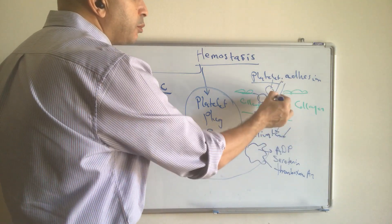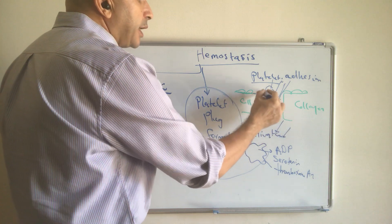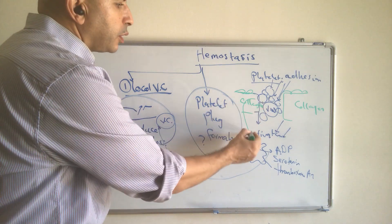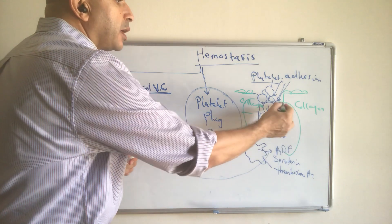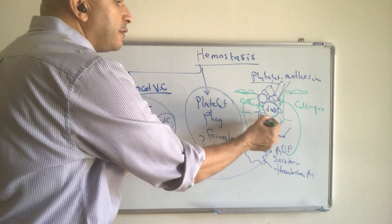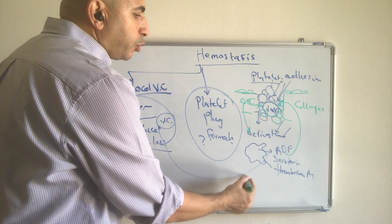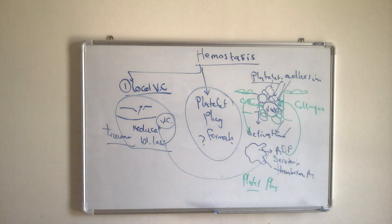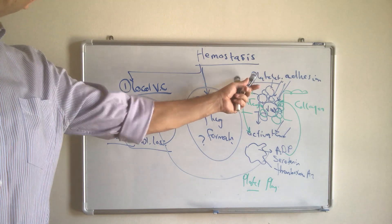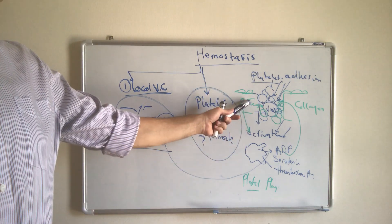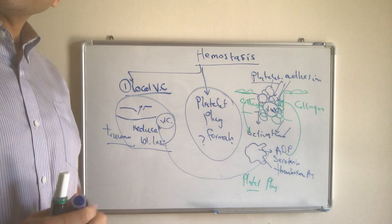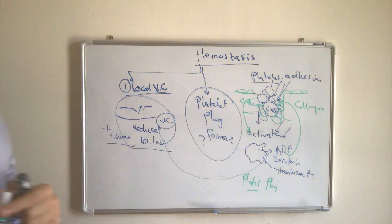All these factors work either to cause vasoconstriction of the blood vessels or act as chemotactic factors, attracting more platelets to the site of injury. Once more platelets arrive, they undergo activation and release their contents, recruiting even more platelets. Eventually, a large cluster of platelets forms — this is the platelet aggregation, or platelet plug. The mechanism involves adhesion to subendothelial collagen, then activation with release of granule contents, and then further recruitment of platelets to form the plug.